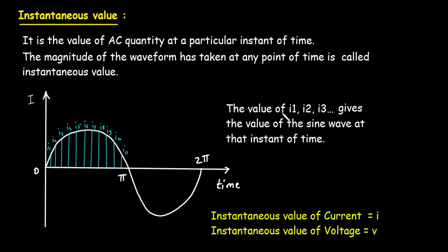The values of I1, I2, I3 give the value of the sine wave at that instant of time. The magnitude of the waveform taken at any point of time is called instantaneous value. Also remember that instantaneous values are represented by small letters — instantaneous value of current is represented by small i, and instantaneous value of voltage is represented by small v.